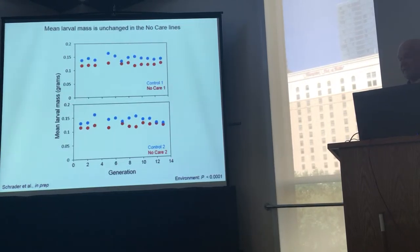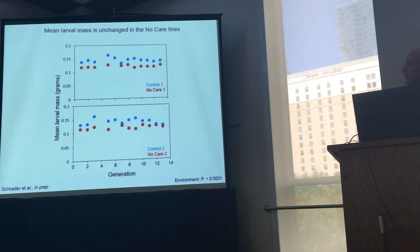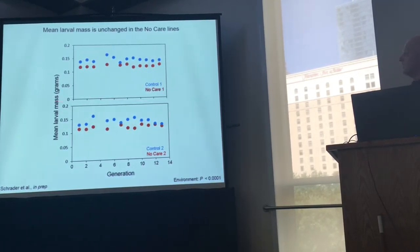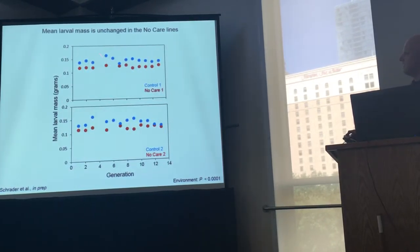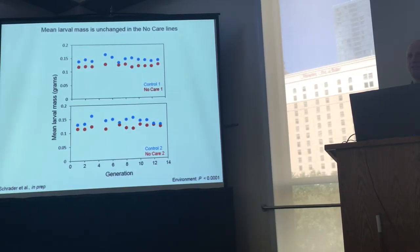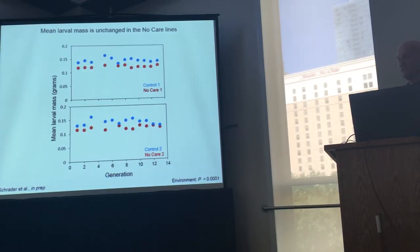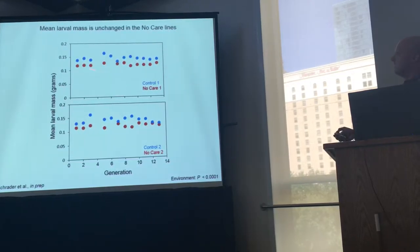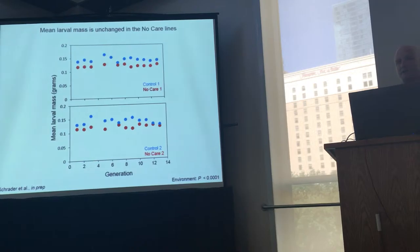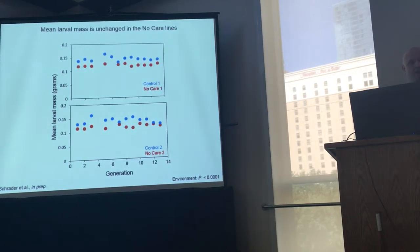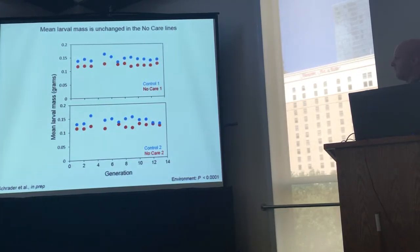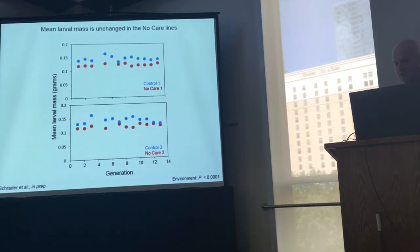But when we look at that, we find that there's absolutely no change in larval mass over time. Here's mean larval mass in these lines across 13 generations. The full-care control lines are always producing heavier larvae, which makes sense because having parents is good. But in the no-care lines, there has not been a decrease in larval mass, even though larval density has been increasing. This is something we've been trying to understand.